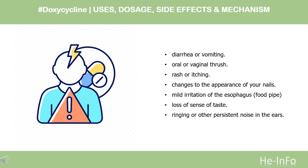The more common side effects of doxycycline include diarrhea or vomiting, oral or vaginal thrush, rash or itching, changes to the appearance of your nails, mild irritation of the esophagus (food pipe), loss of sense of taste, and ringing or other persistent noise in the ears.